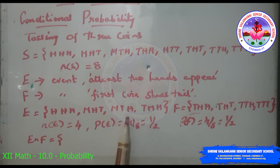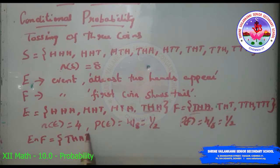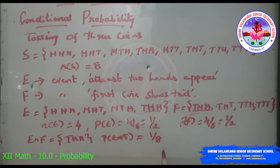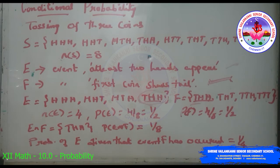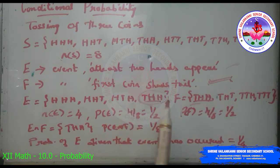P(E∩F) = 1/8. We are given that the first coin shows tails, that is F occurs. With the information of occurrence of F, outcomes where the first coin does not result in a tail should not be considered while finding the probability of E. This information reduces our sample space to only those outcomes favorable to F. The sample point of F which is also favorable to event E is THH.